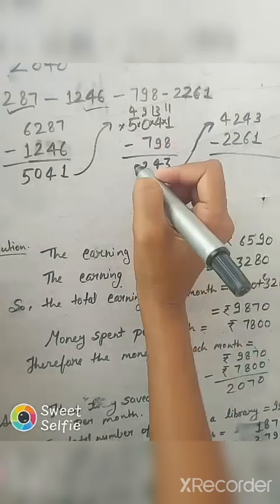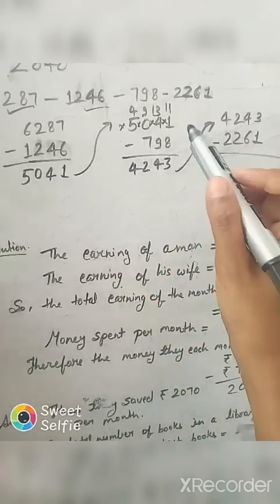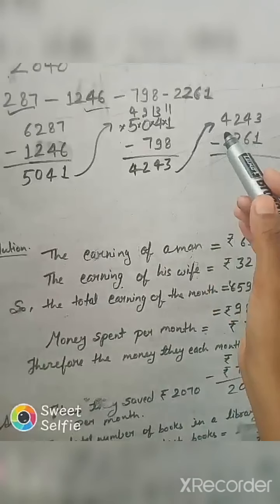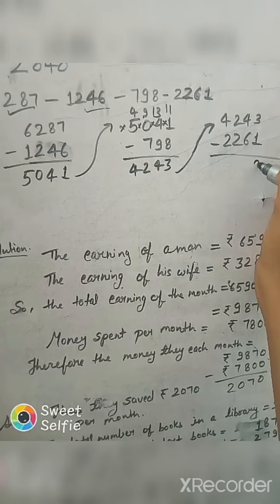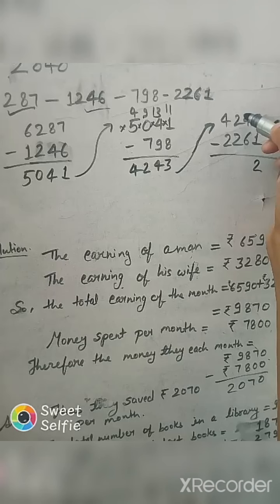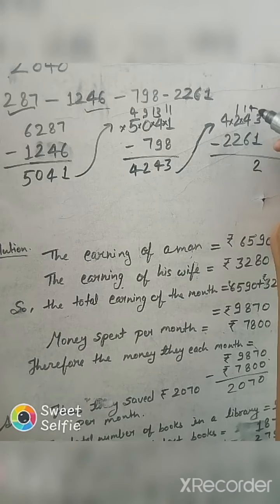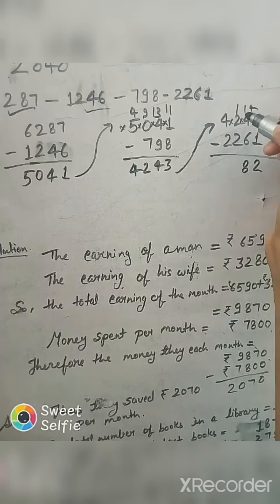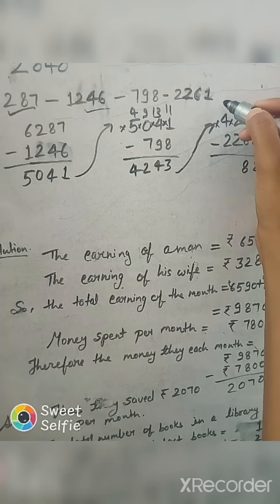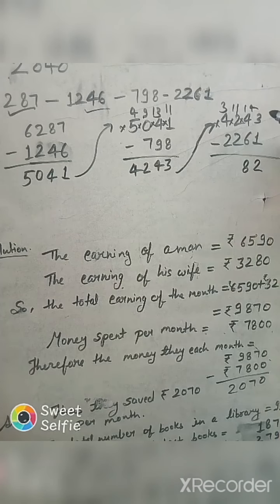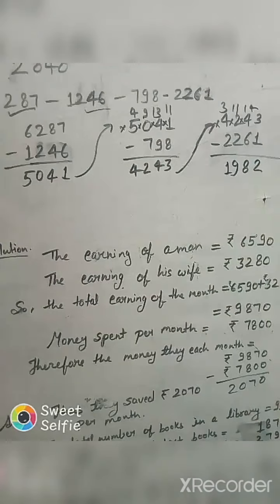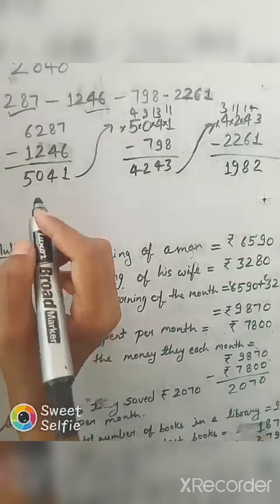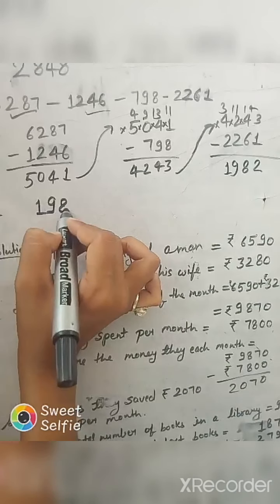Now we have to subtract 2261 from 4243. Three minus one is two. Here we have to borrow from hundreds, so here will be left one and here fourteen. Fourteen minus six is eight. Again we will borrow from thousands, then at thousands place left only three and at hundreds place will be eleven. Eleven minus two is nine, and three minus two is one. So we get one thousand nine hundred eighty-two. The answer is 1982.